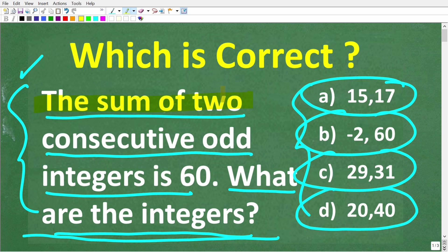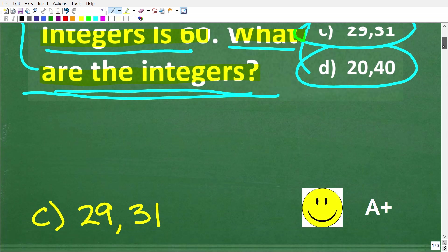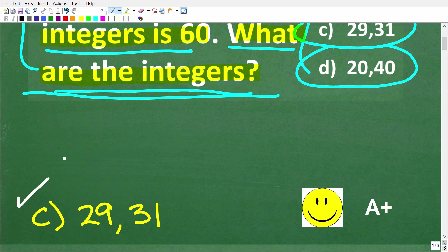One more time: the sum of two consecutive odd integers is 60. What are the integers? Well, the correct answer here is C, which is 29 and 31.